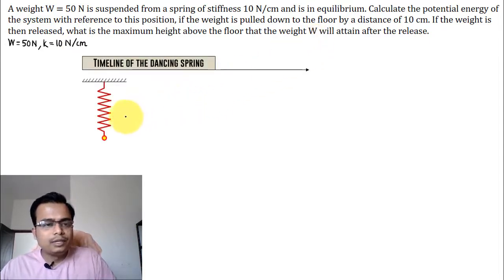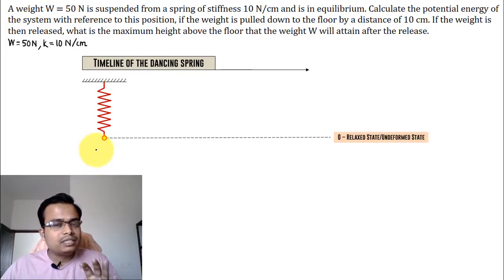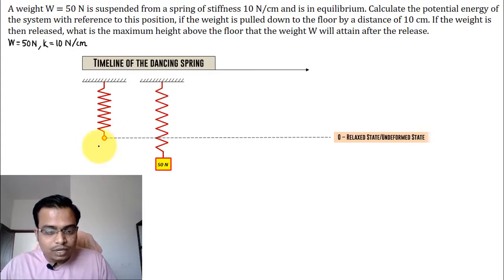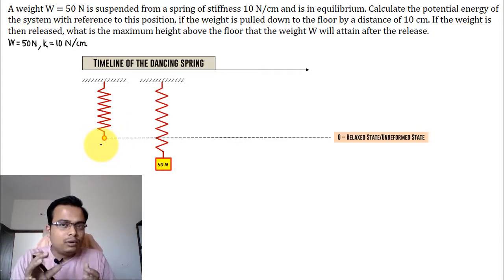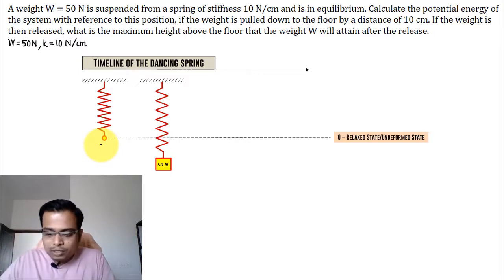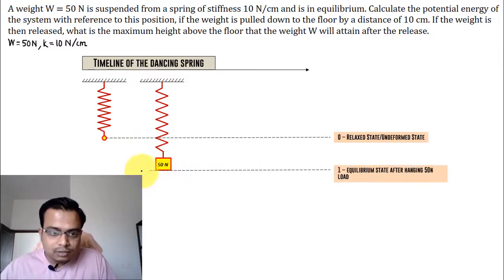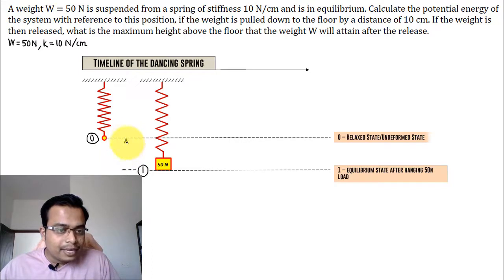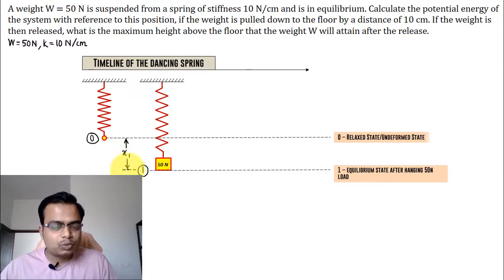Initially, this represents the relaxed or undeformed state of the spring — no load was acting on the spring. We then suspend a load of W = 50 Newtons, which causes elongation because the load acts downward. This is position one, and let's take this as the zero position or datum. Based on the load and spring stiffness, we can calculate this elongation, represented as x1.